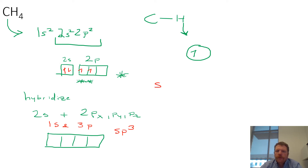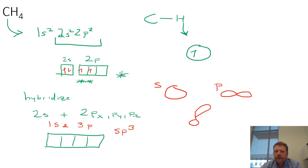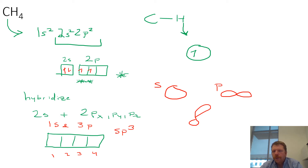An s orbital has a spherical shape and a p orbital has a dumbbell shape. So an sp3 hybrid orbital looks like a combination of both. How many orbitals are there like that? 1, 2, 3, 4. So we've taken 1s orbital and 3p orbitals and made 4 sp3 hybrid orbitals.